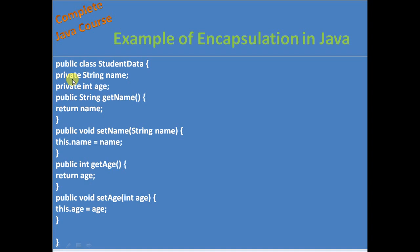We are not defining public variables. Why? Because encapsulation says to hide the data. We are hiding the data from outside the class, and we can hide data only by using the private access modifier.